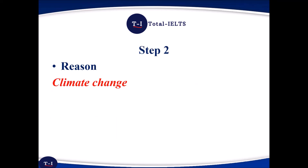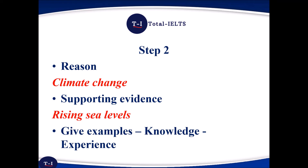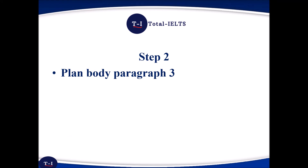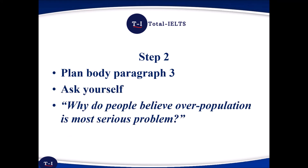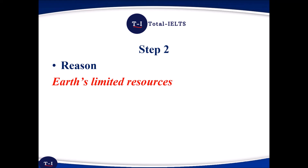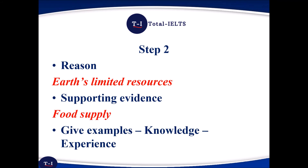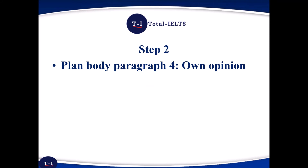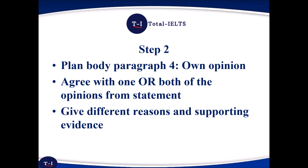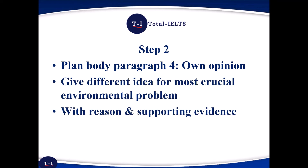For example, one reason could be that it causes climate change, and supporting evidence for this could be rising sea levels. In paragraph three, ask yourself: why do people believe overpopulation is the most serious problem? One reason could be that the earth has limited resources, and supporting evidence could be the limited food supply. For paragraph four — your own opinion — you can either agree with one or both of the opinions from the statement, but you need to give different reasons and supporting evidence. Alternatively, you can give a different idea for what you believe is the most crucial environmental problem and back this up with a reason and supporting evidence.